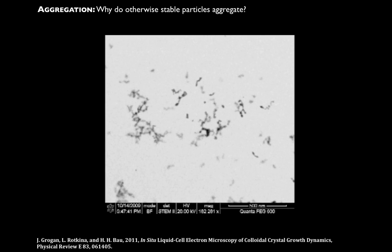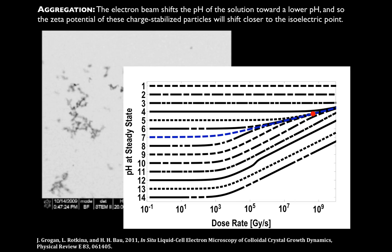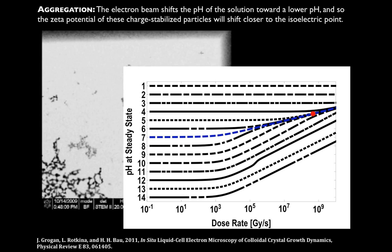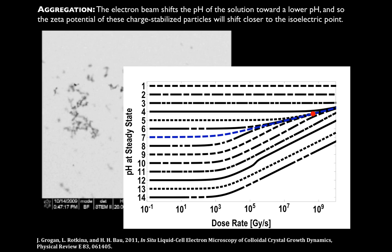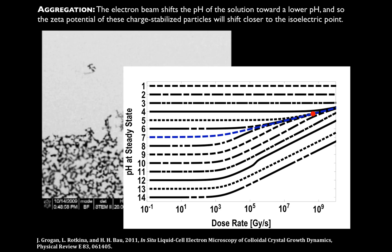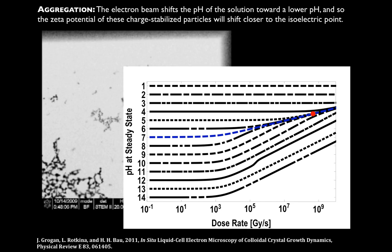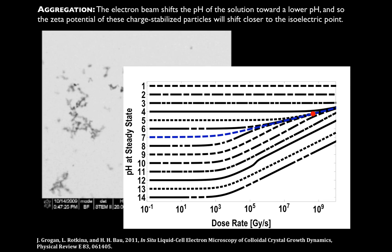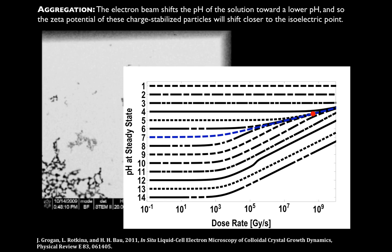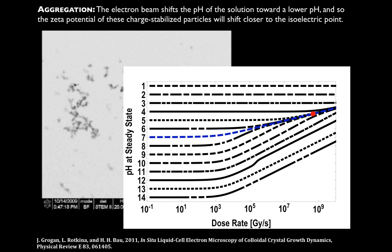The other option is that since these are charged-stabilized particles, maybe changes in pH can cause the particles to go closer to the isoelectric point, making them unstable. That seems to be the case — we can destabilize these particles by changing the pH much closer to the unstable point. We see that for a pH 7 solution initially, if we irradiate it with the dose rate for these beam conditions, we actually drop the pH within the beam region to 4.5. So within your beam region especially, there are very strong changes in pH of your solution — and notice that's always towards the acidic. If you're working in an acidic solution you're probably going to be okay, but if you're in a neutral or basic solution you're going to be changing your pH very significantly.